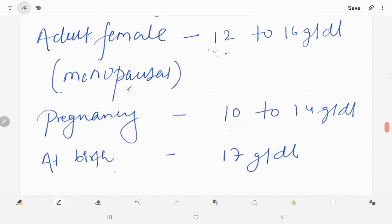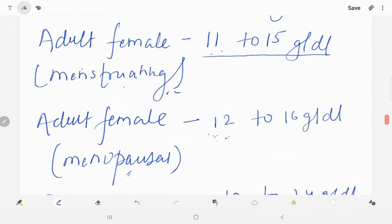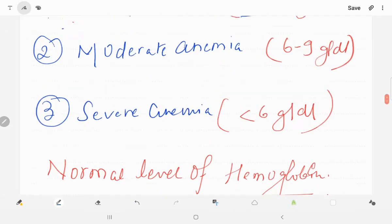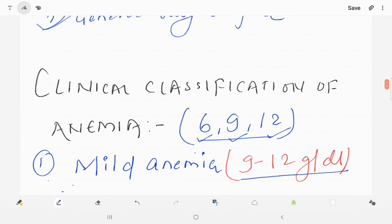In pregnancy, normal level is 10 to 14 grams per deciliter. And at birth, it should be noted that at birth hemoglobin is 17 grams per deciliter. Let's get back to clinical classification of anemia.